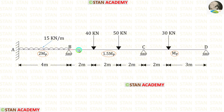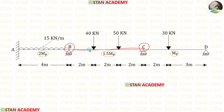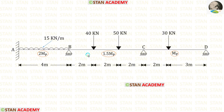Now let us take span BC. In span BC, at joint B there will be a plastic hinge, and at joint C there will also be a plastic hinge. The third plastic hinge can occur either under the point load 40 kN or under the point load 50 kN, so in this span there will be two mechanisms. We are now going to make the second mechanism, assuming that the third plastic hinge occurs under the point load 40 kN.